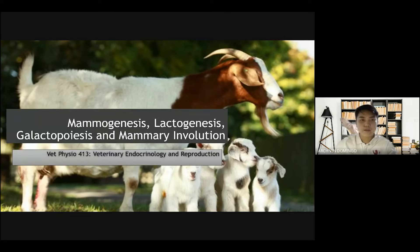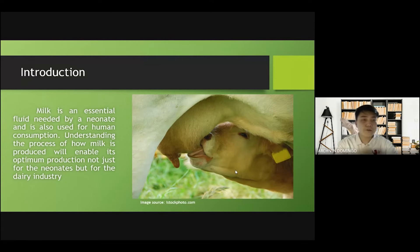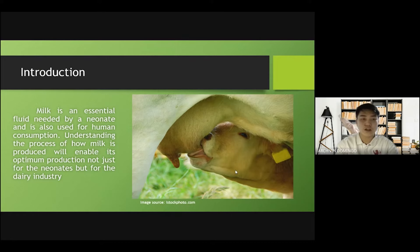Hello, we'll be talking about mammogenesis, lactogenesis, galactopoiesis, and mammary involution, which is part of the course Veterinary Endocrinology and Reproduction. Starting with an introduction, milk is an essential fluid needed by the neonate and is also used for human consumption. Understanding the process of how milk is produced will enable its optimum production, not just for the neonates, but also for the dairy industry.